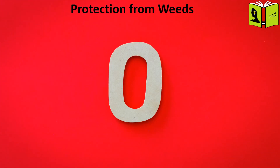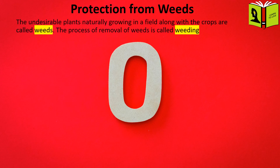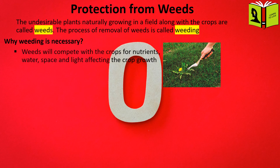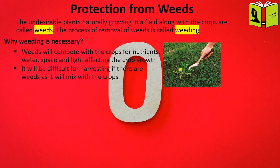Protection from weeds. The undesirable plants naturally growing in a field along with the crops are called weeds. The process of removal of weeds is called weeding. Why is weeding necessary? It is necessary because the weeds will compete with the crops for nutrients, water, space, and light, affecting the crop growth. It will be difficult for harvesting if there are weeds, as they will mix with the crops. Some weeds are poisonous for animals and humans.